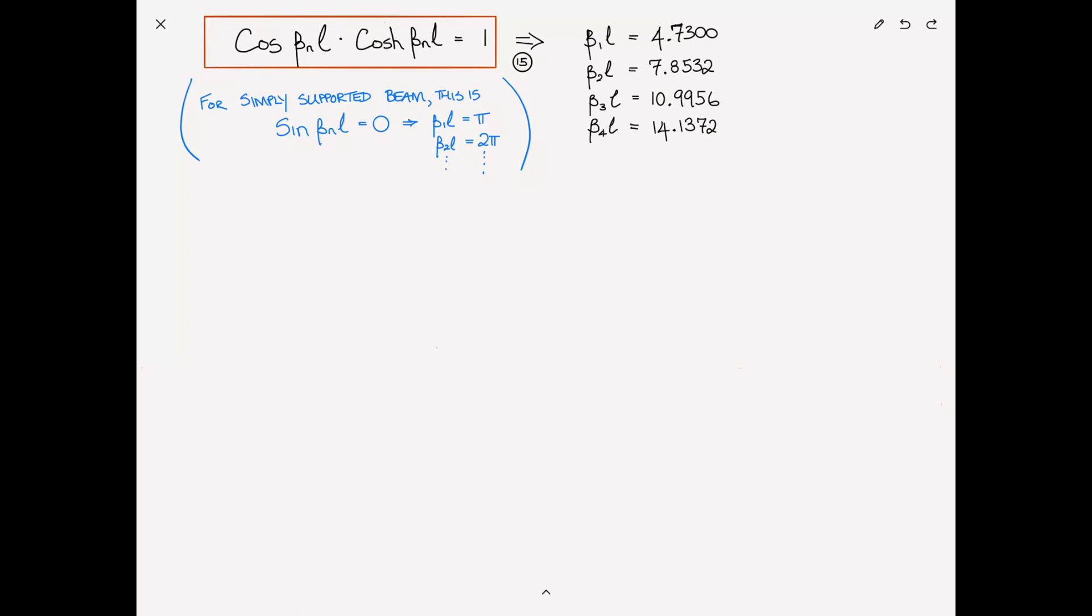Well, it should be intuitive that a simply supported beam, which is just pinned at each end, is going to, in effect, be less stiff than a beam that is clamped at both ends, where not only is the displacement restricted, but so is the slope. And you're seeing that reflected in the fundamental frequency. The clamped-clamped beam has a fundamental frequency of 4.7, where the simply supported beam is π, which is 3.141592654.